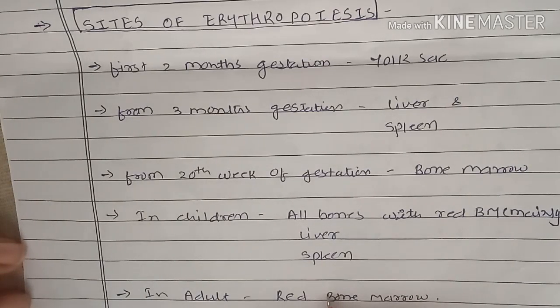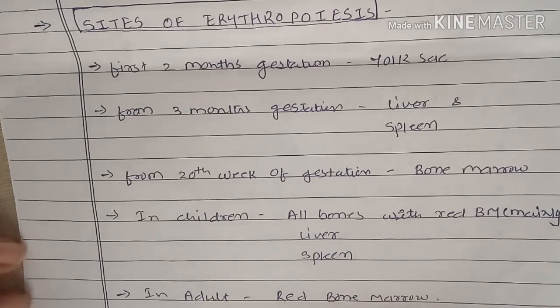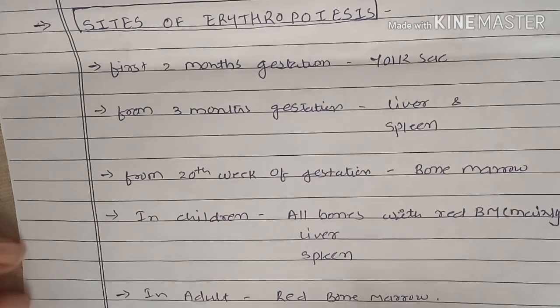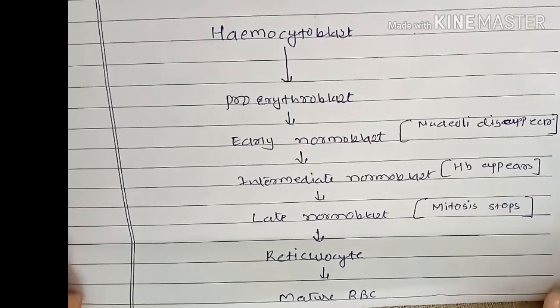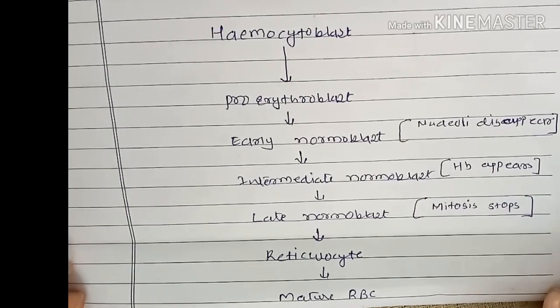In adults, erythropoiesis occurs mainly in the red bone marrow, which is found in the axial skeleton and ends of the long bones.